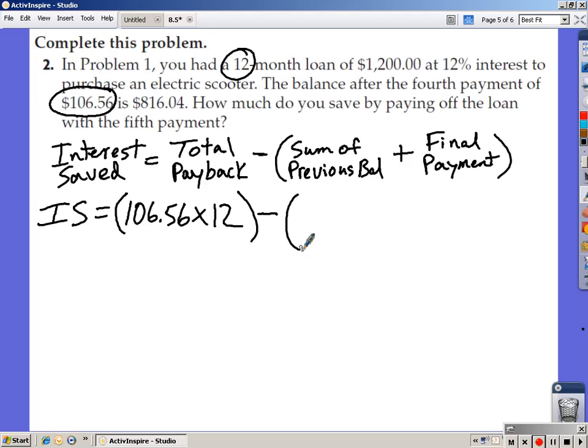Minus the sum of my previous balances. If the balance after the fourth payment is $816.04, I really don't need $816.04 for this problem, but I did need to know that I made four payments. I made four payments of $106.56 times four. Now, the only part that I still have left to find is the final payment that I made when I found the final payment amount, paying it off on the fifth payment. That final payment from number one was $824.20. $824.20 would have zeroed out the note.